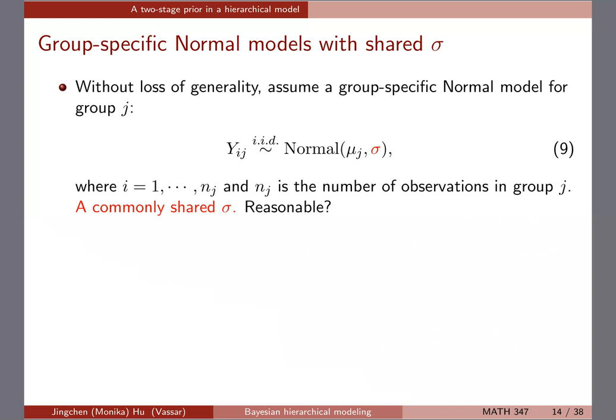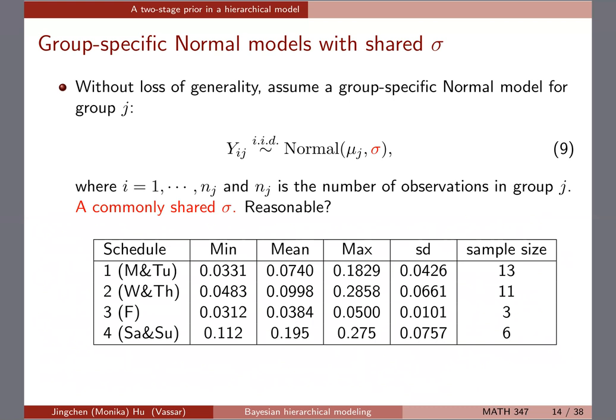Think about whether it makes sense to have the same sigma across the four models — that would mean similar variability in the data across groups. Looking at the plot and the table of sample standard deviations, schedules one, two, and four are similar enough, but schedule three is very tight whereas the others are more spread out, so assuming the same sigma might not be the best choice.